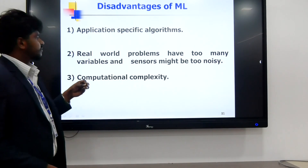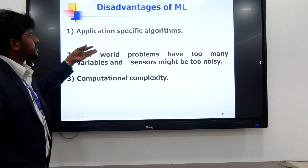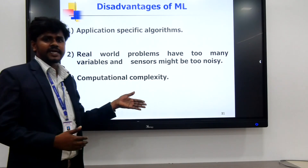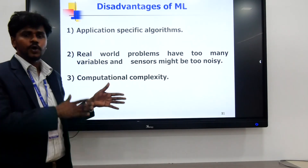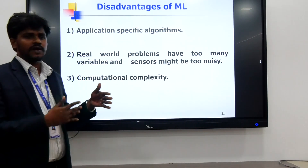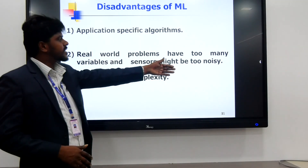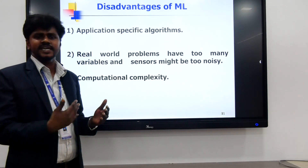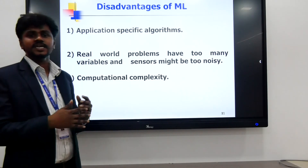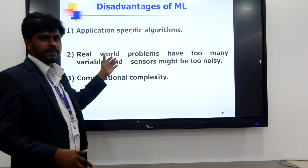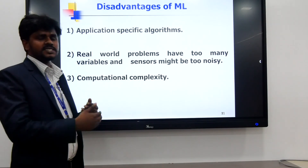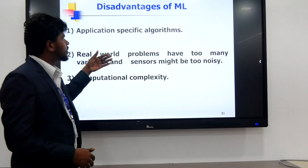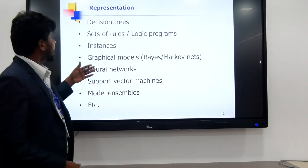Disadvantages of machine learning algorithms: application-specific algorithms are only used by machine learning algorithms. For example, medical data algorithms are only for medical purposes. Real-world problems have many variables and sensors make data noisy. Real-world data settings are very noisy, so more number of data is needed. The problem is not always identifiable and results are not always printable values. There is also high algorithmic complexity.